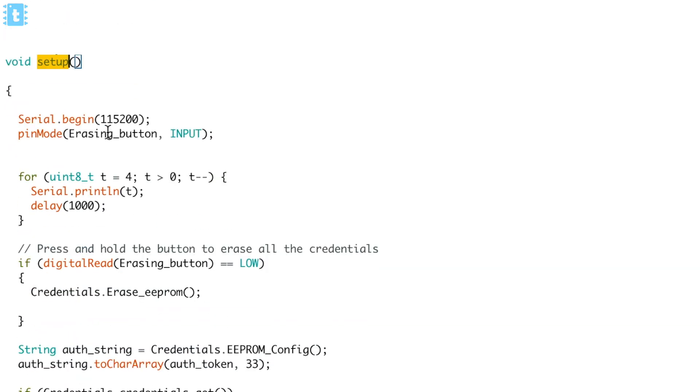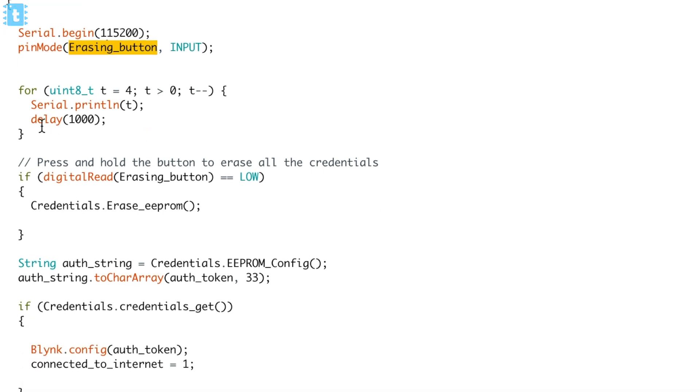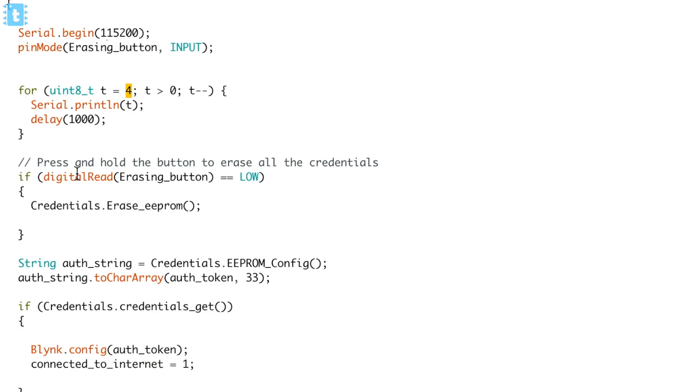You can also add variables and functions required for your project here in this part of the code. In the setup part, first I declare the erasing button as input. After that, I generate a four-second delay using a for loop. After four seconds, I read the erasing button pin — if that pin is low, the erase EEPROM function is called. So if you press and hold the erasing button for more than four seconds after startup, the function will be called.